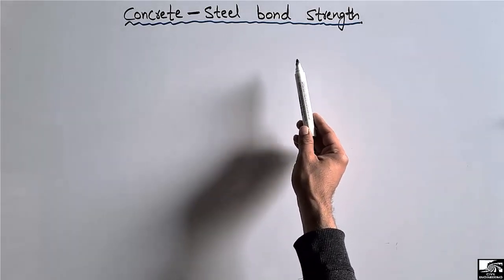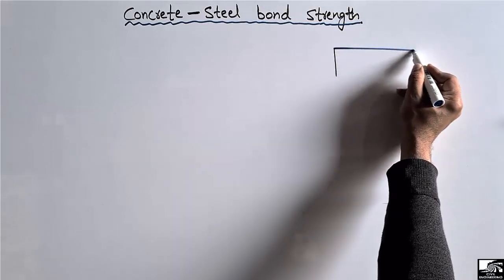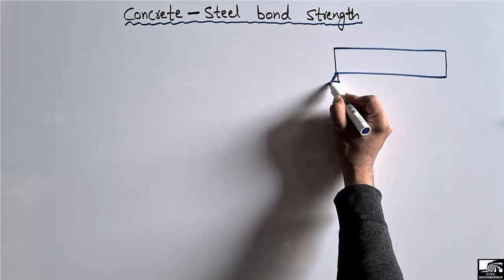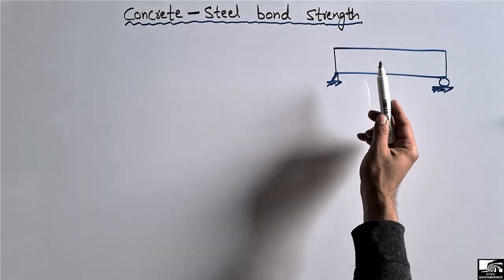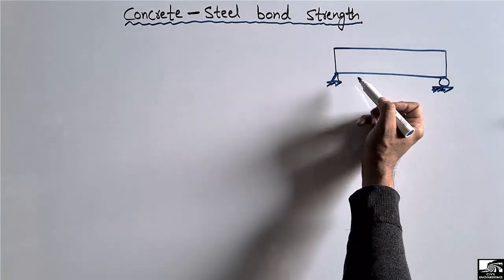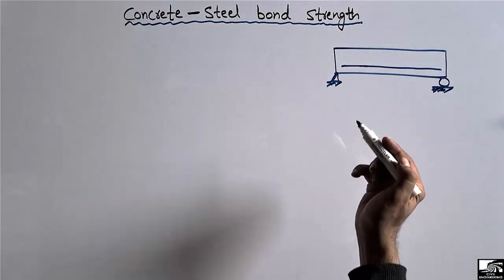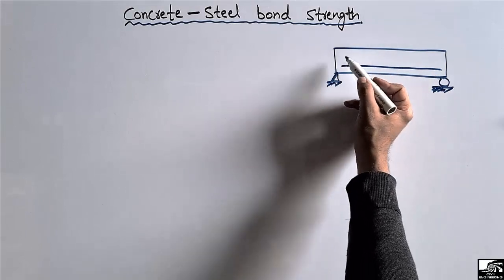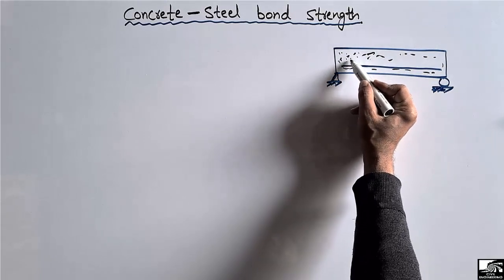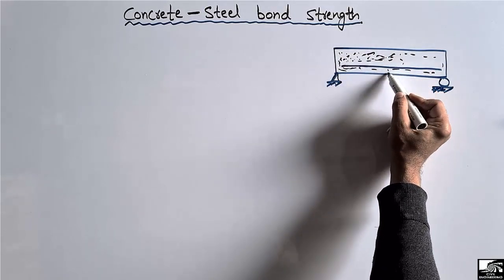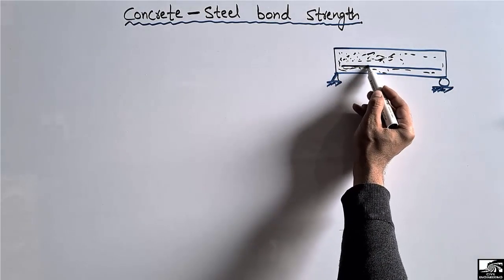The bond between the concrete and reinforcement plays an important role in carrying the load of the structure. Let's suppose this is a simply supported beam made up of reinforced concrete — an RCC beam — and this is a reinforcement bar placed in this beam. There are various steel bars placed in this beam, and each steel bar is surrounded by concrete placed all around it.